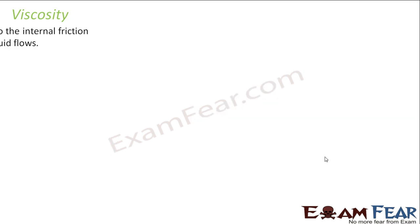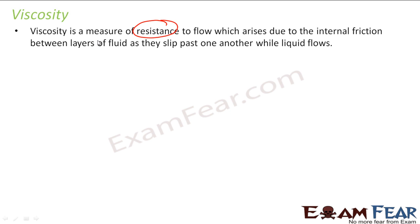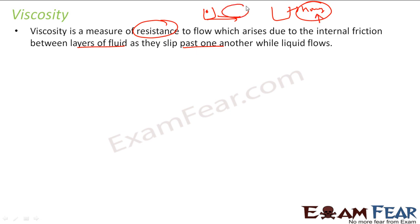Viscosity is the measure of resistance to flow, which arises due to internal friction between the layers of fluid as they slip past one another when the liquid flows. For example, if you put a glass of water on the floor it will flow easily, but if you put a glass of honey it won't flow easily — it flows very slowly because the resistance in honey is more than in water.